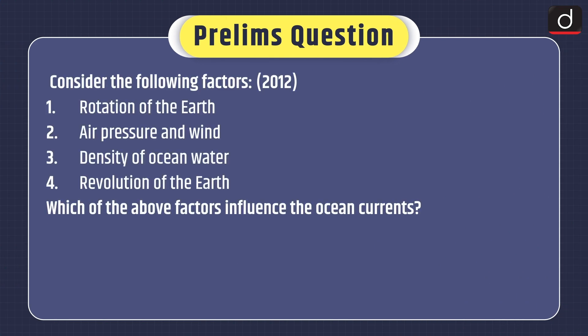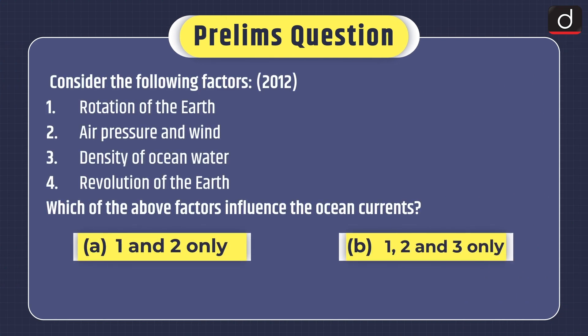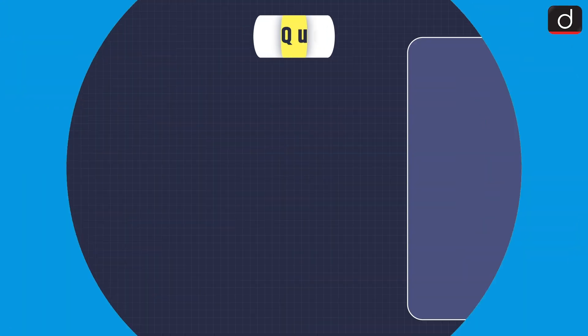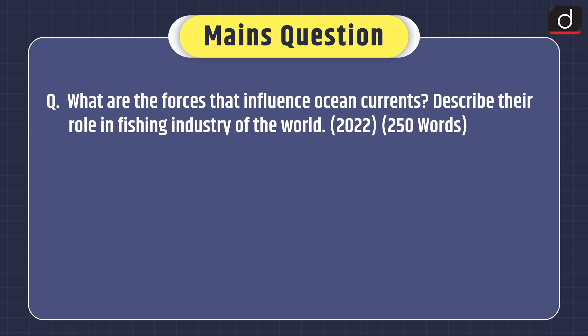Now for practice questions. A prelims question from the 2012 exam: Consider the following factors — 1. Rotation of the Earth, 2. Air pressure and wind, 3. Density of ocean water, 4. Revolution of the Earth. Which of the above factors influence ocean currents? Options: 1 and 2 only; 1, 2 and 3 only; 1 and 4 only; or 2, 3 and 4 only. For the Mains question: What are the forces that influence ocean currents? Describe their role in the fishing industry of the world. That's all for today — stay tuned for the next episode. Thanks for watching.